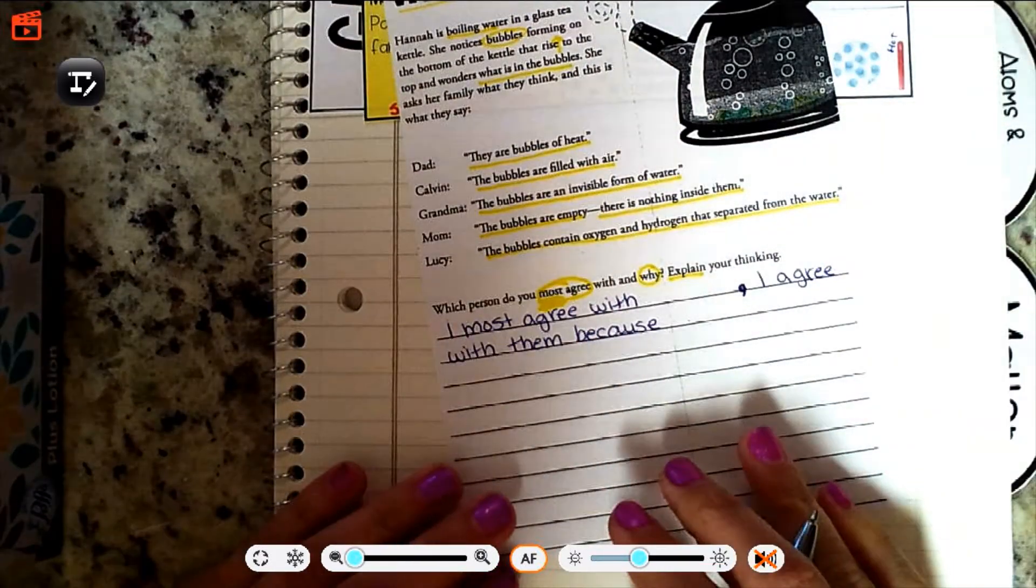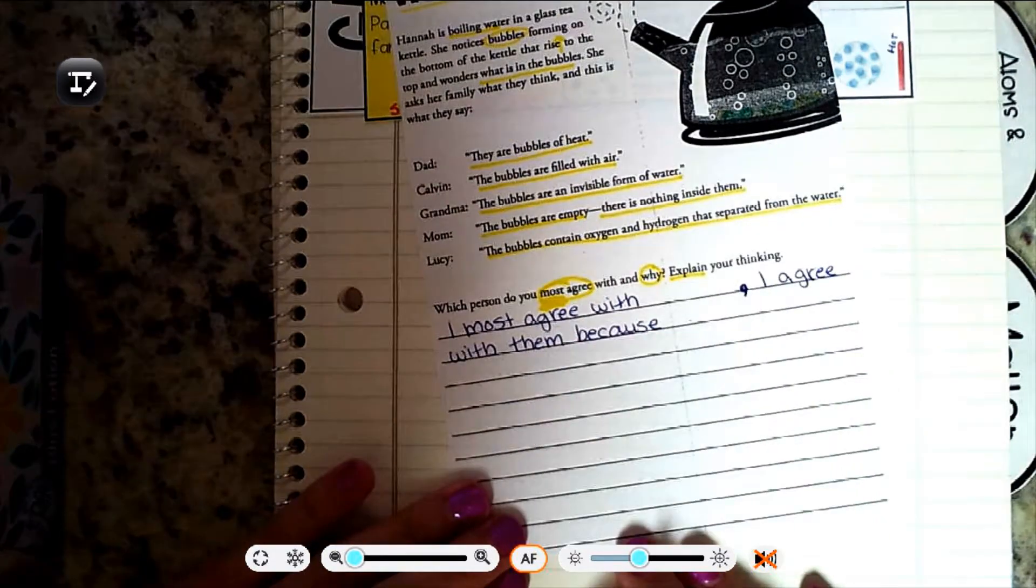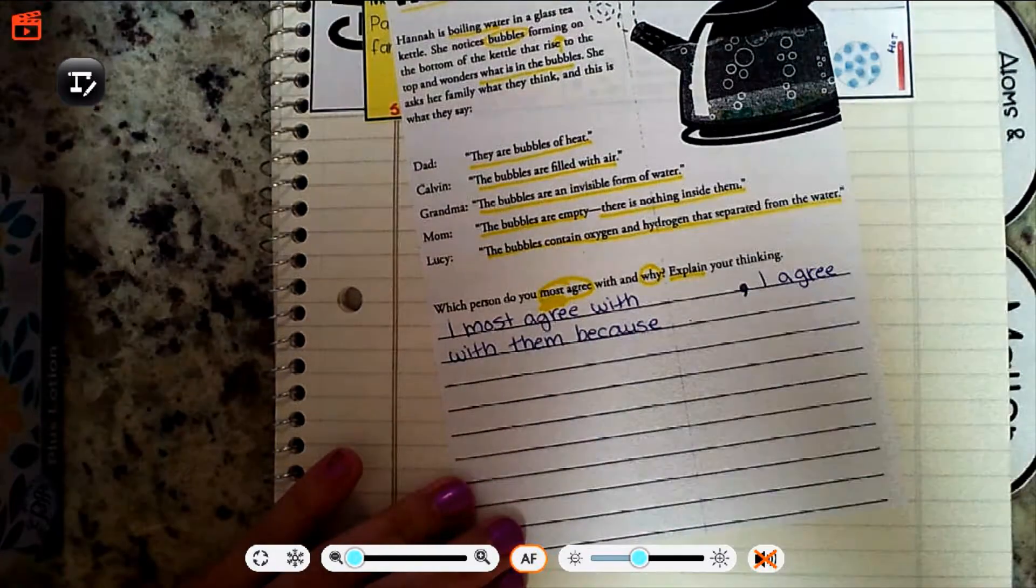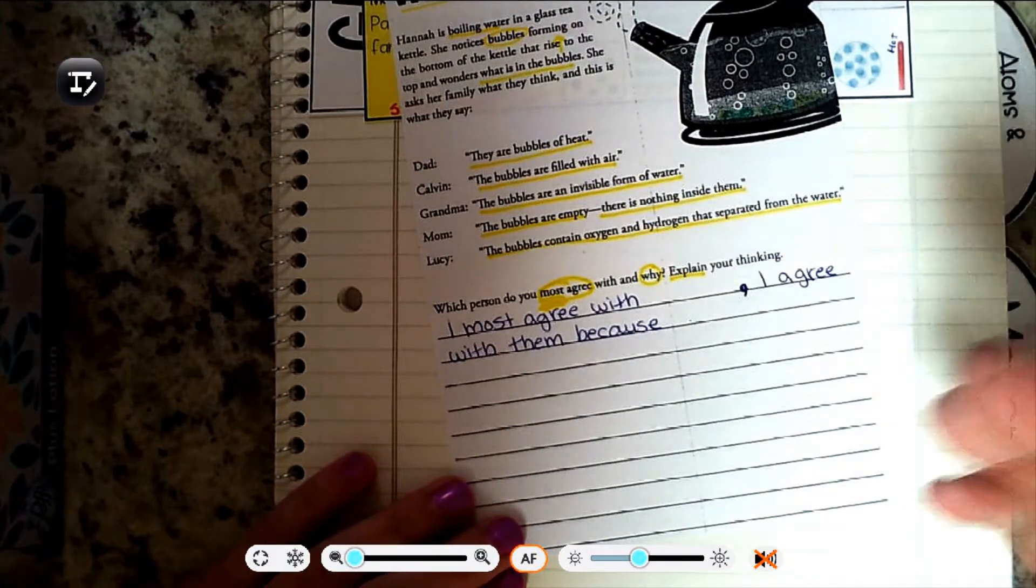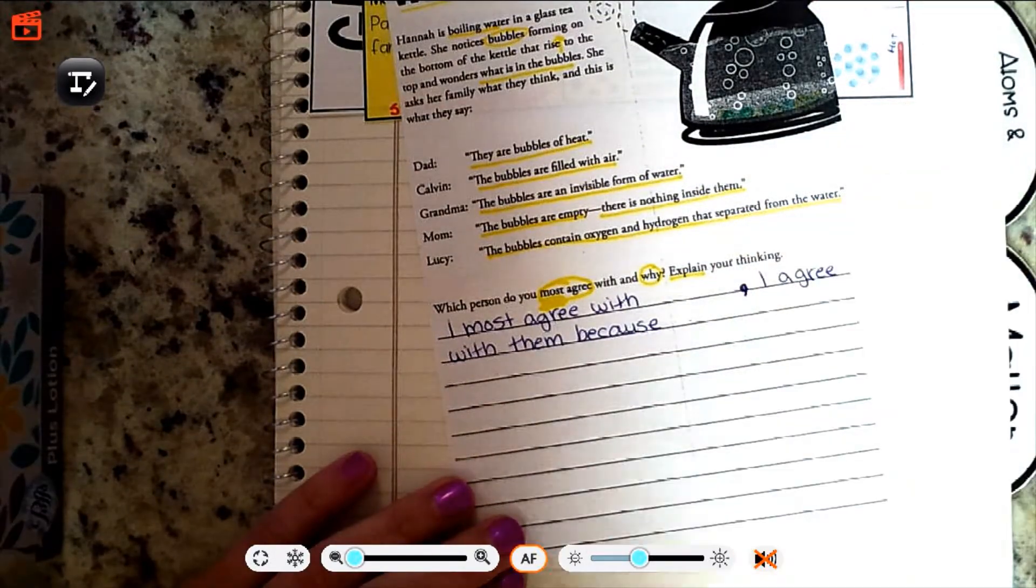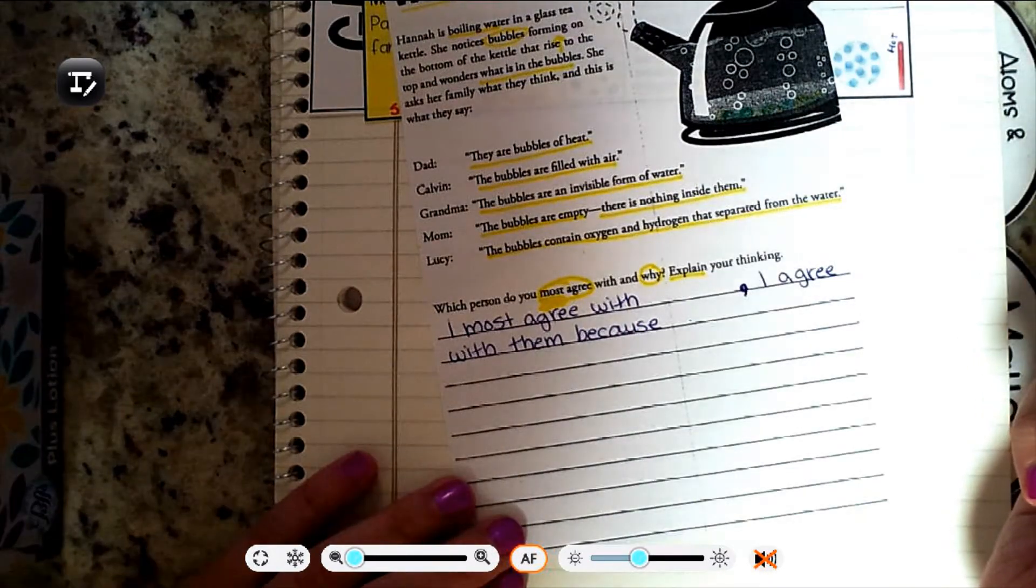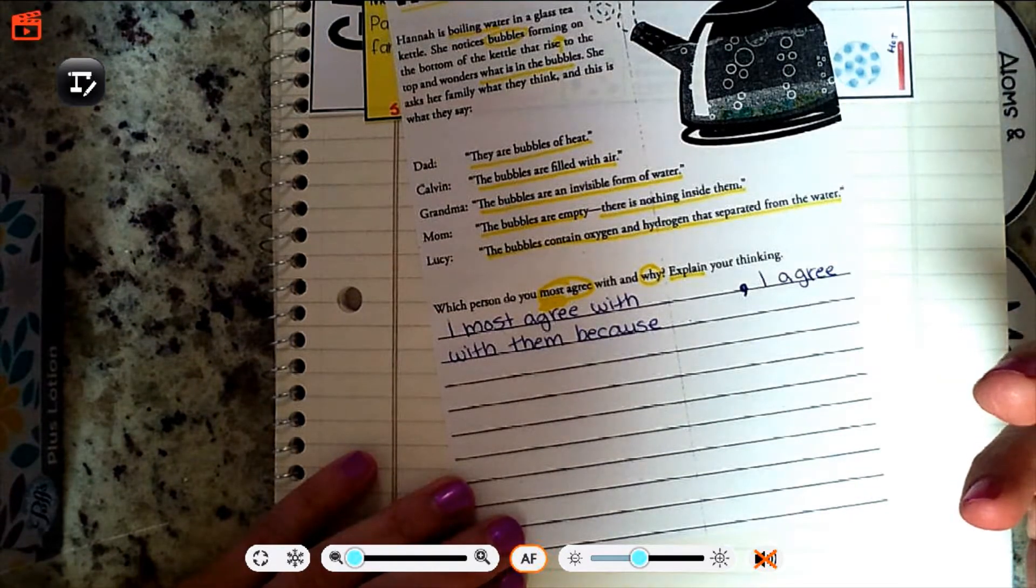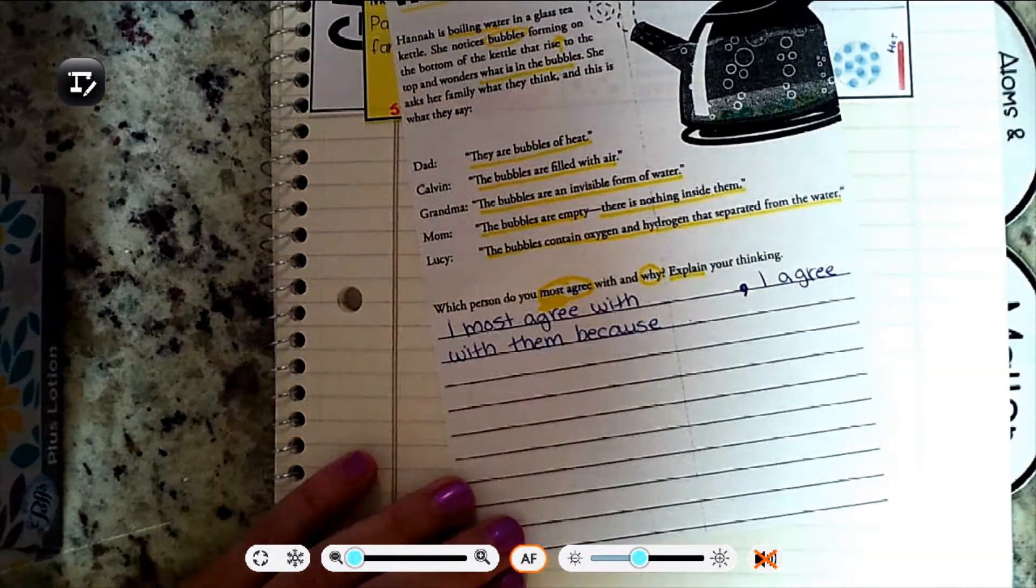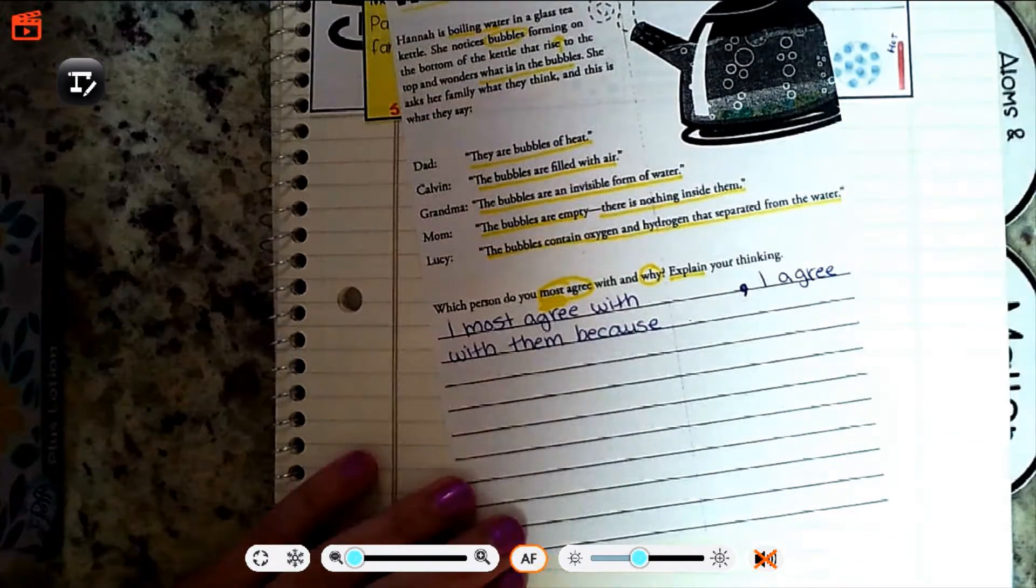Maybe you found out why you agree with somebody. You can also, maybe even for extra credit, if you want to say that you picked it because you don't agree with somebody. Like for example, I don't agree with mom. The bubbles are empty. There is nothing inside of them. We know from watching our couple of videos on matter that balloons have stuff inside of them even though they look empty. I don't agree with mom.